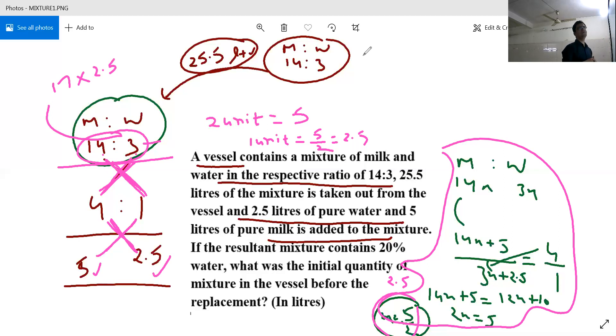So 17, x key value is 17 into 2.5, 17 into 2, how much will it be? 34, and 17 into 2.5, 17 is equal to 8.5, so 22.5 is equal to 8.5, so 22.5 is equal to 8.5.